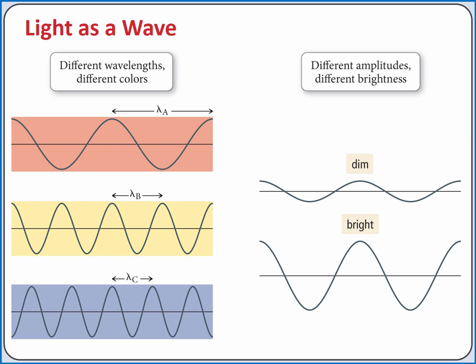When light acts as a wave, the color of light corresponds to the wavelength or frequency of the wave, while the brightness of light corresponds to the amplitude of the wave.